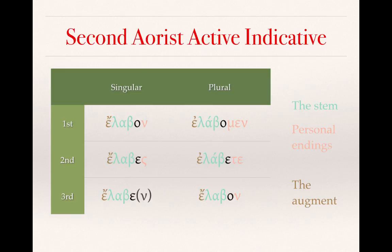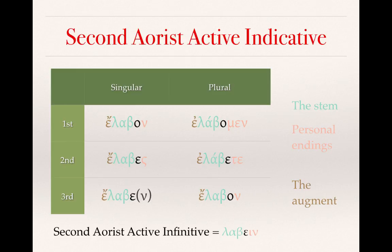Continuing through the paradigm: elaben, he/she/it took or received; elabomen, we received or took; elabete, you all took or received; elabon, they took or received. And here is an example of a second aorist active infinitive: labein, to take, to receive. It doesn't have an augment because the augment is only present in the indicative mood.